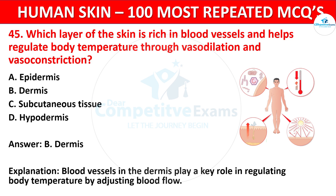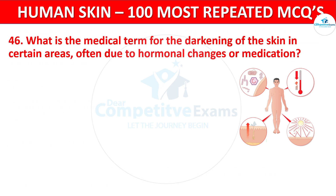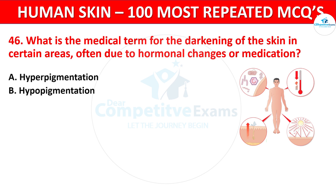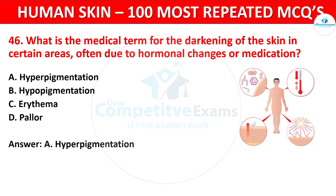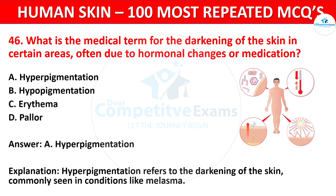Question 46. What is the medical term for the darkening of the skin in certain areas, often due to hormonal changes or medication? Your options: Hyperpigmentation, Hypopigmentation, Arrhythmia, or Pallor. The correct answer is Hyperpigmentation. Hyperpigmentation refers to the darkening of the skin, commonly seen in conditions like melasma.